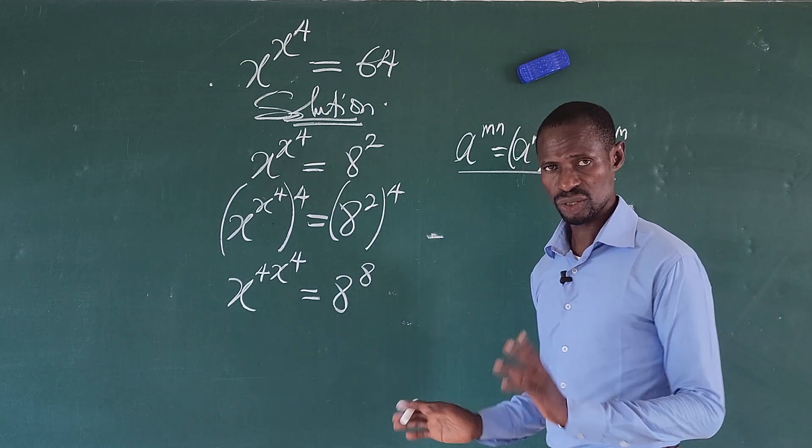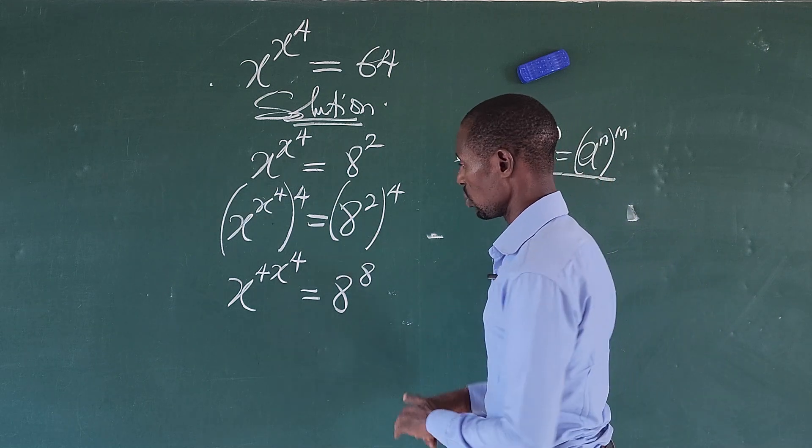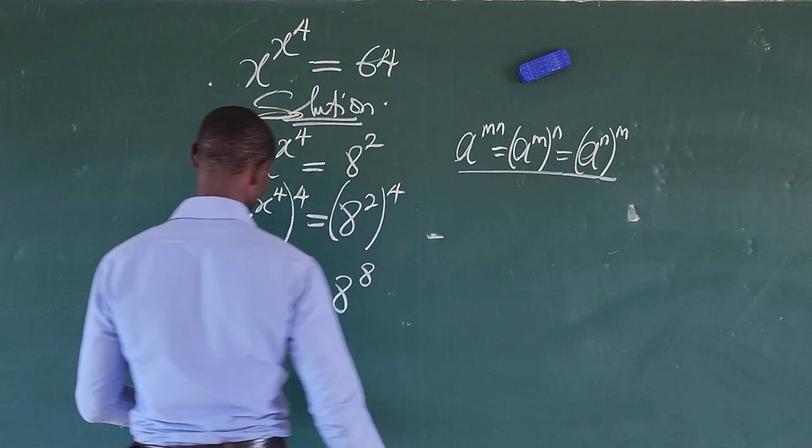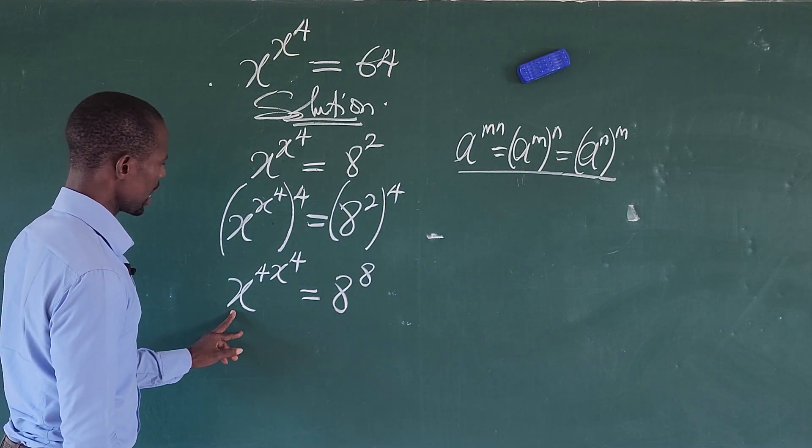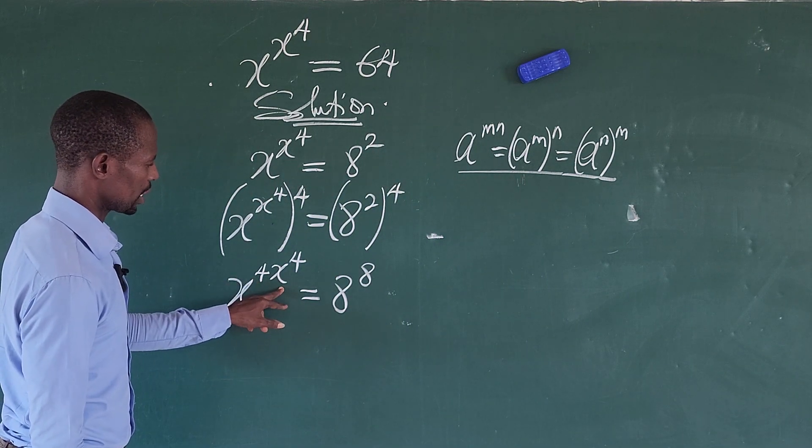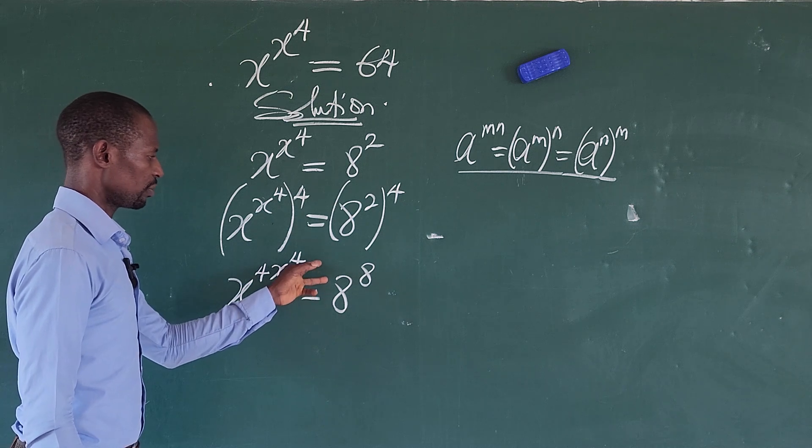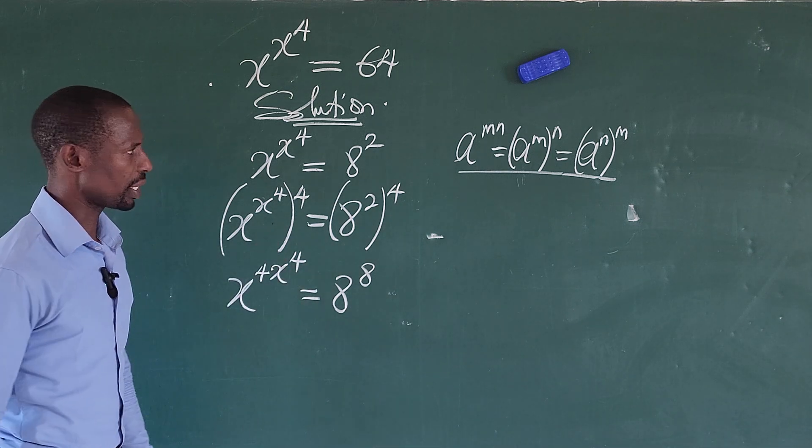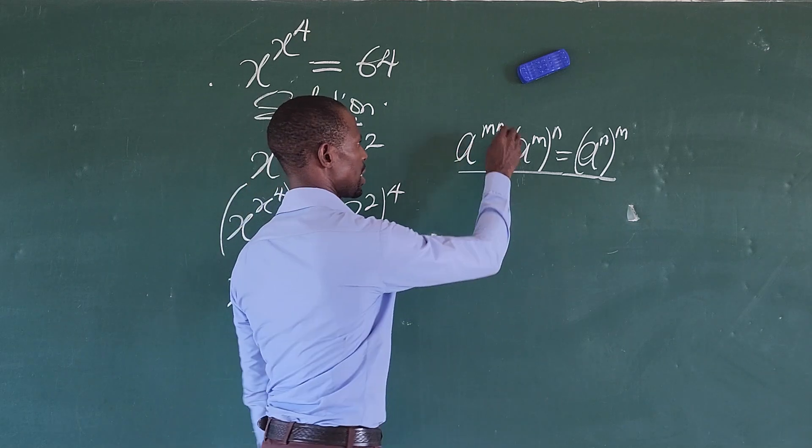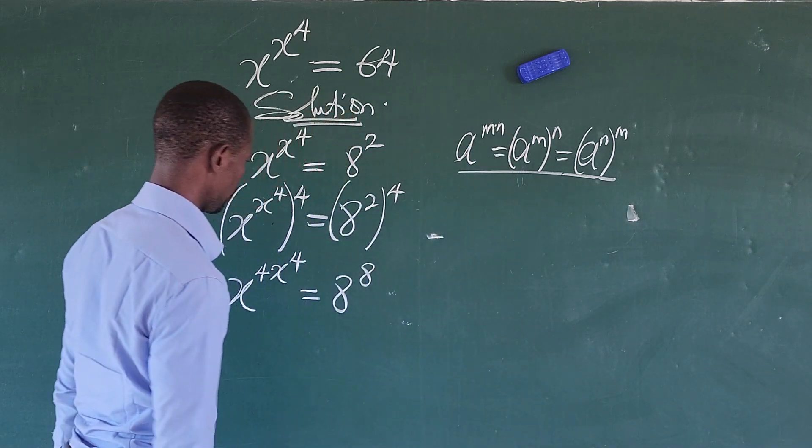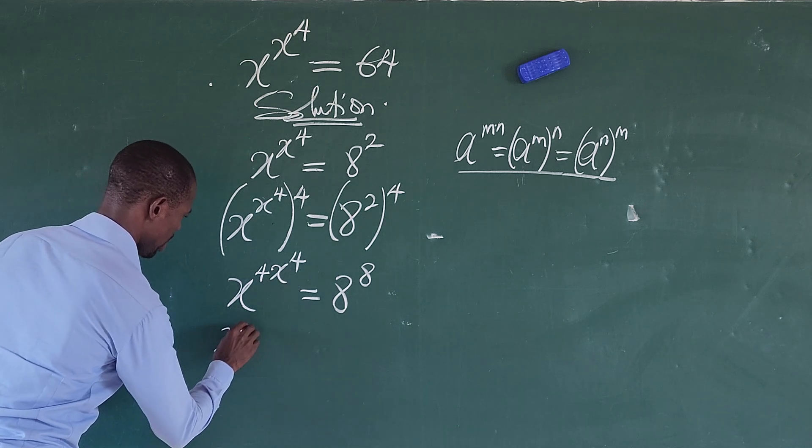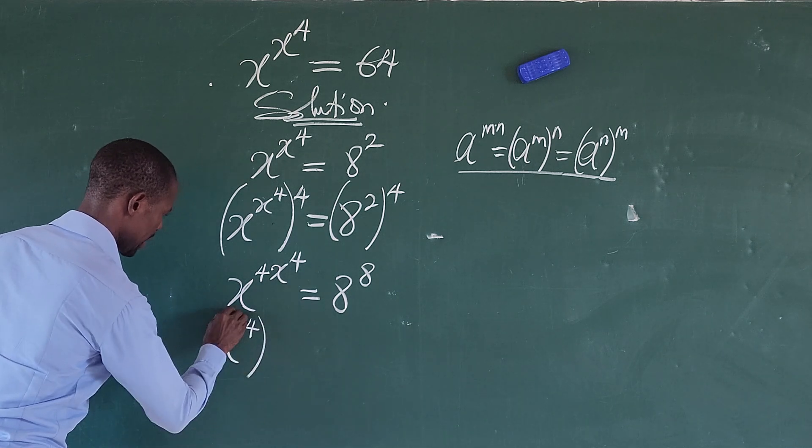Again, this is a very simple one just to apply your simple laws in indices. Again, now, if you watch carefully, you now discover that we are having x to the power of 4x to the power of 4. We can separate this guy out here like we have in this case here. So what we do, we can rewrite this side of the equation and so this will give us x to the power of 4 in bracket to the power of x.